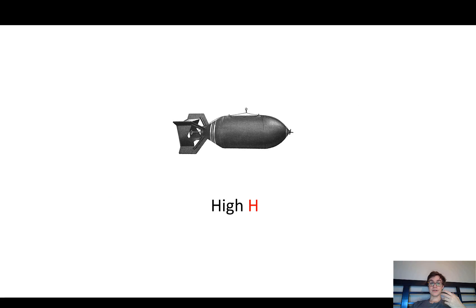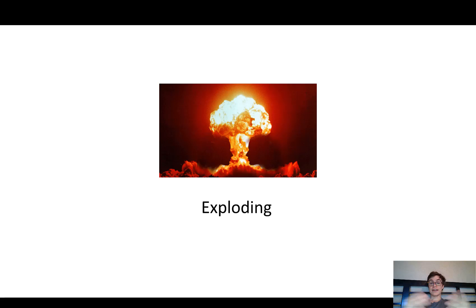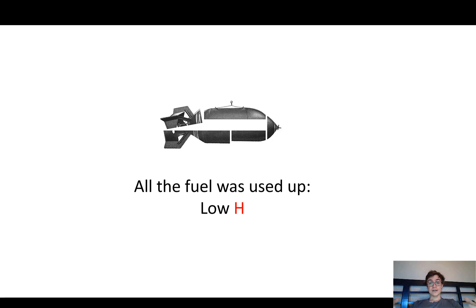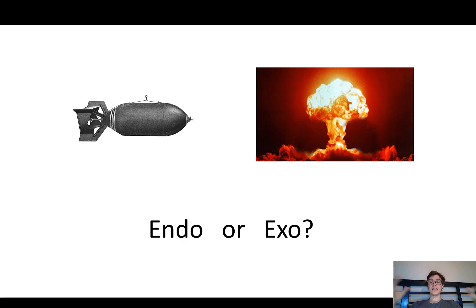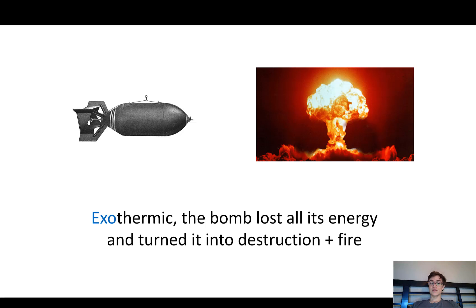For example, a bomb has very high enthalpy, but then it'll explode, and when all the fuel is used up, it has low enthalpy — that's why it can't explode again. So is a bomb exploding endothermic or exothermic? Is the energy leaving the bomb or entering the bomb? In this case, the energy is clearly leaving the bomb — it's in the fuel, but then it explodes out into heat and fire and destruction. So bombs exploding are exothermic reactions because the bomb lost all the energy; it exited the bomb and turned into destruction and fire.